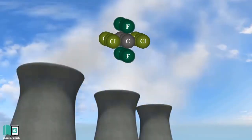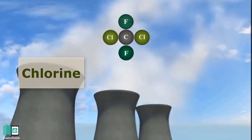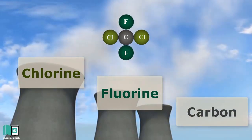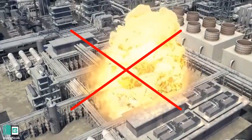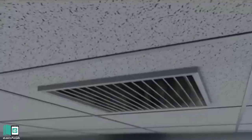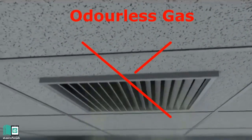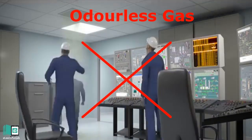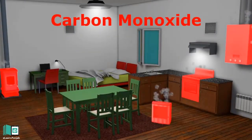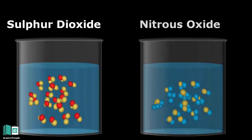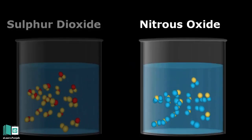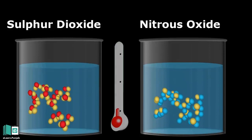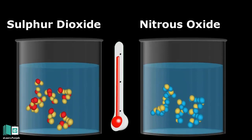Chlorofluorocarbon is a combination of chlorine, fluorine, and carbon. Chlorofluorocarbons are not hazardous gases in the sense that they do not cause fires — these gases are colourless. Like carbon monoxide, while sulphur dioxide and nitrous oxides are detectable when they are high in concentration, CFCs are not.